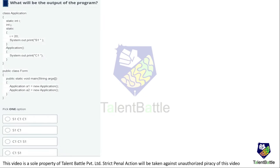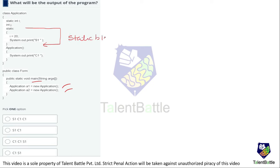The first question asks for the output of a Java program. If you check the program properly, you can identify the main part, along with object creation statements that directly call the constructor. One more important part is the static block and the constructor block. When an object is created, the constructor gets called automatically.